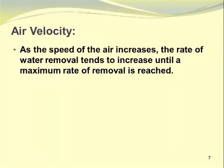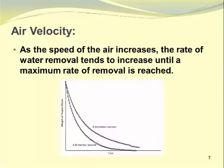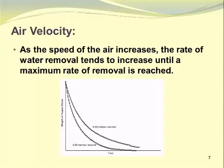As the speed of the air increases, the rate of water removal tends to increase as well, until a maximum rate is reached. In another experiment with peppers, the slower air velocity of 0.25 meters per second dries more slowly than 0.5 meters per second. Tests at 0.75 and 1.0 meters per second showed very little improvement over 0.5 meters per second, but the difference between 0.25 and 0.50 meters per second is quite pronounced.